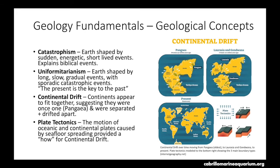Wegener's idea of continental drift needed a 'how' in how these continents separated — that's where plate tectonics comes in. This idea was solidified in the 1950s and 1960s by many scientists, and it ultimately states that there are two plate types: oceanic plates and continental plates. These plates are constantly moving due to movement within the subsurface — movement within the mantle. This movement within the mantle is actually dragging these plates to and from each other, creating separation from continents, causing plates to crash into each other, and creating seafloor spreading where there was no ocean.